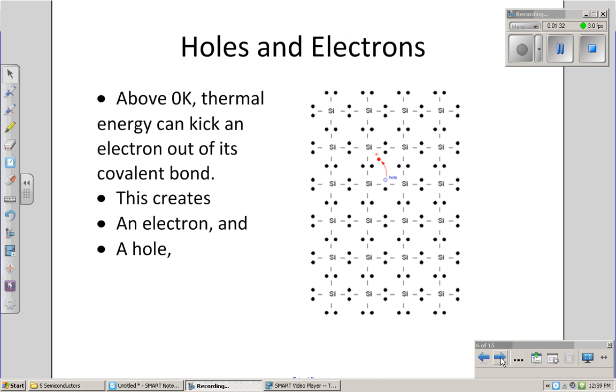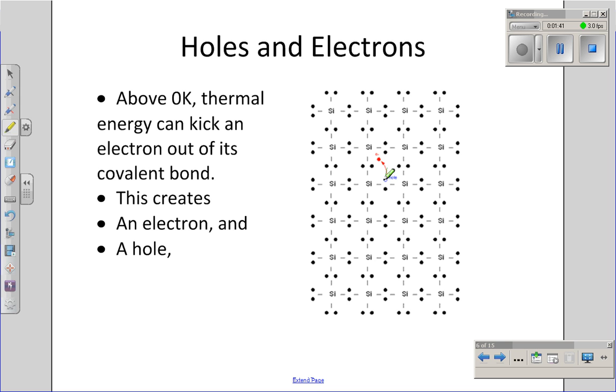Once you get above 0 degrees Kelvin, there's a chance that some of the electrons will jump out of the covalent bonds due to thermal energy. For example here, if an electron gets out of its covalent bond, it's free to roam throughout the crystal. What happens then is the electron has no place to go. All the covalent bonds are filled. The electron can carry current.